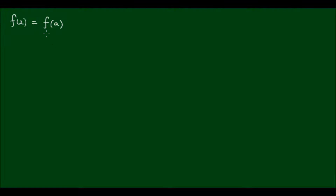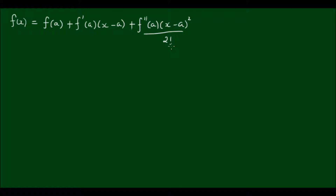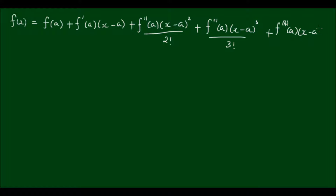I'm going to call that point A. So the first term of the series is f(A), plus the first derivative of f times (x minus a), plus the second derivative of f at a times (x minus a) squared divided by 2 factorial, plus the third derivative of f at a times (x minus a) to the power of 3 over 3 factorial, plus the fourth derivative of f at point A times (x minus a) to the 4th divided by 4 factorial, and so on ad infinitum.